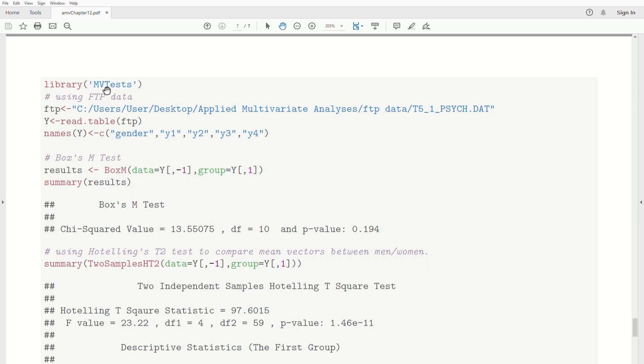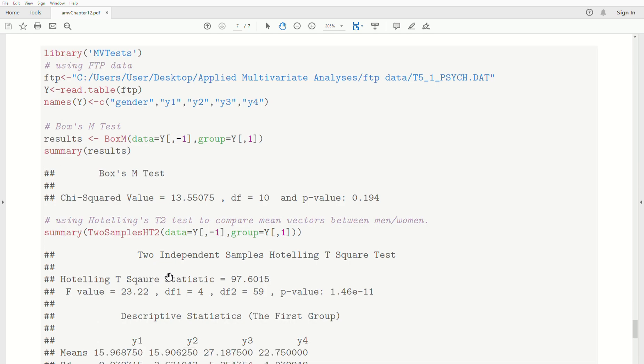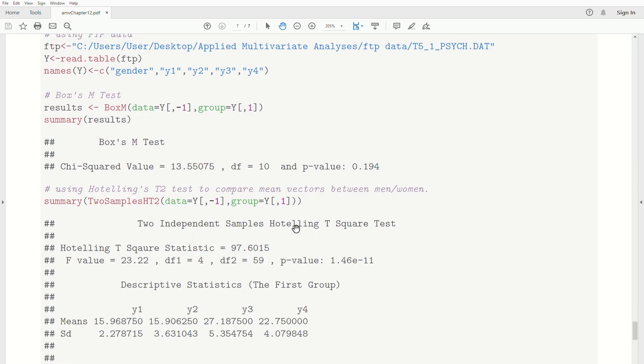And in this same package, MVTest, there's a function called two-sample Hotelling's T-squared. You put in the data. Remember, it's all the data but the first column. And then the group is the first column. And then it conducts the Hotelling's two-sample Hotelling's T-squared.